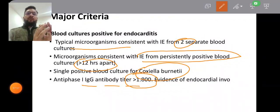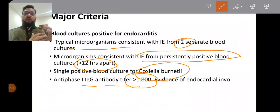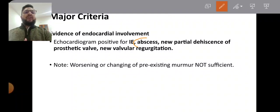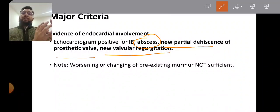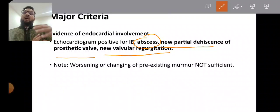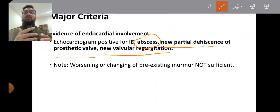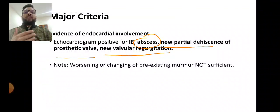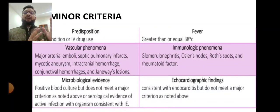On echocardiography, major criteria are fulfilled if there is an abscess, new partial dehiscence of a prosthetic valve, or new valvular regurgitation—not worsening of pre-existing regurgitation or pre-existing dehiscence. Pre-existing murmur that has worsened also does not fulfill the major criterion. Only new findings fulfill the major echocardiographic criterion.